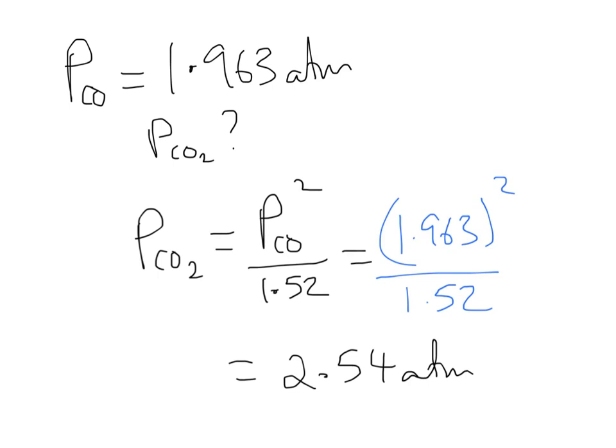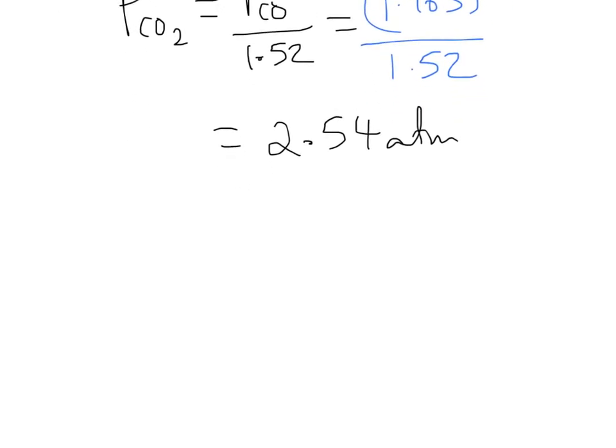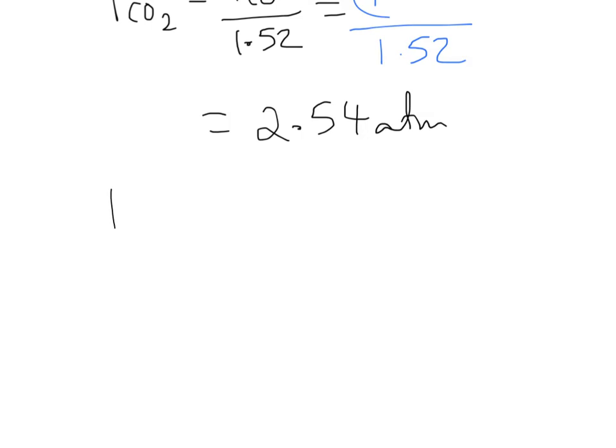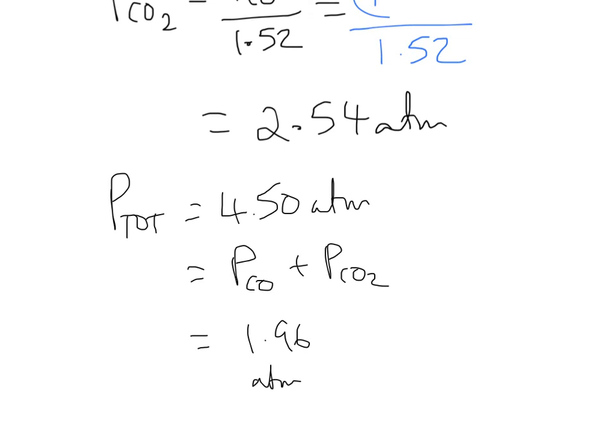So how do we know if we did it right? Well, one thing we can do is we can check and substitute back in. Again, we know the total pressure in this problem was 4.5 atmospheres. We know that the total pressure is the sum of the two partial pressures. And we know that the partial of carbon monoxide was 1.96, and the partial of CO2 was 2.54.